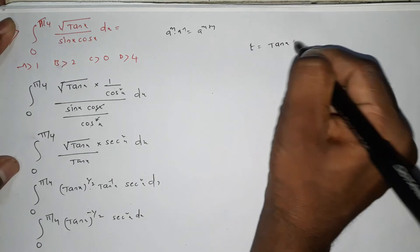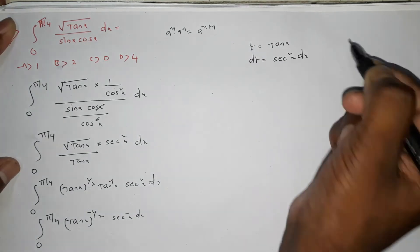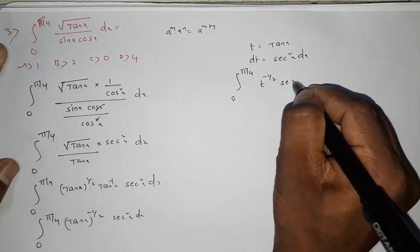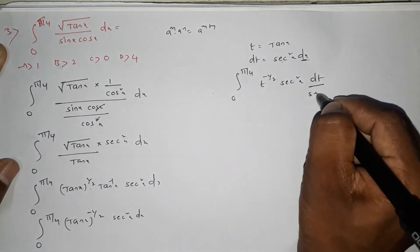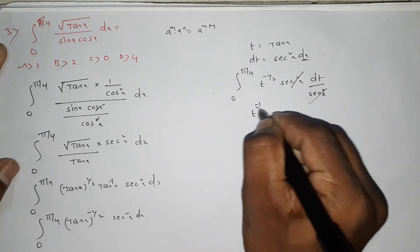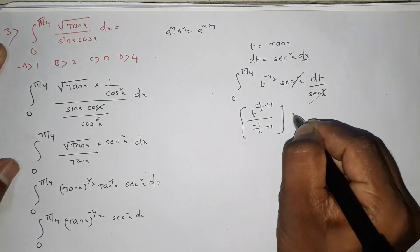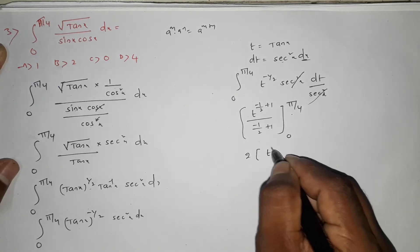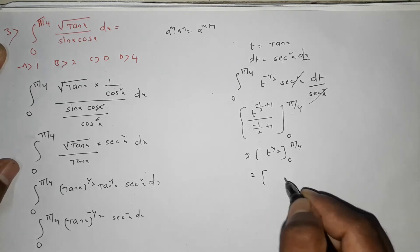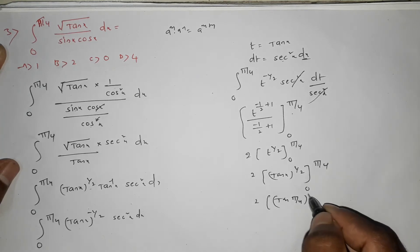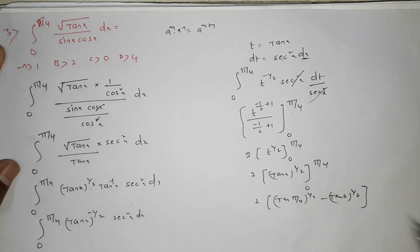Let t equal to tan x. Then dt equals sec squared x dx. Integration becomes 0 to pi by 4, t power 1 by 2 minus 1 into dt, which is t power minus 1 by 2. Integrate: t power (minus 1 by 2 plus 1) by (minus 1 by 2 plus 1) equals t power 1 by 2 by 1 by 2, i.e., 2 root t. Limits 0 to pi by 4: 2 times root of tan(pi/4) minus root of tan 0. Tan(pi/4) is 1, so answer is 2. Option is 2.